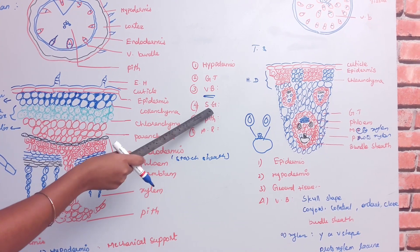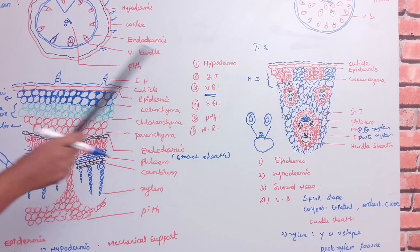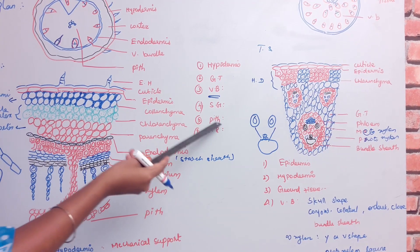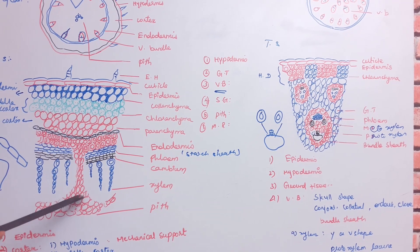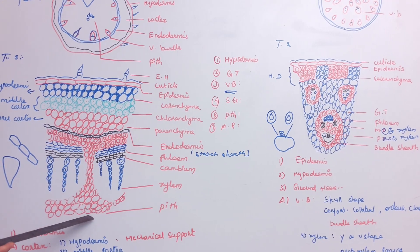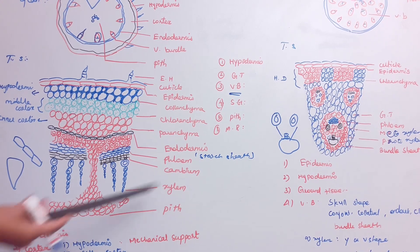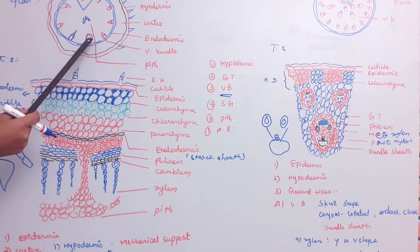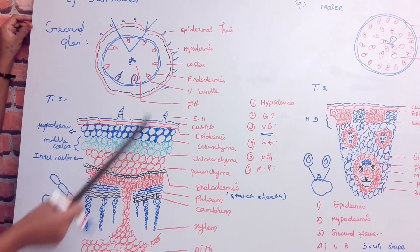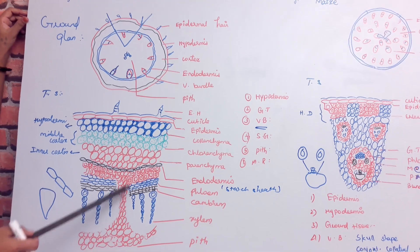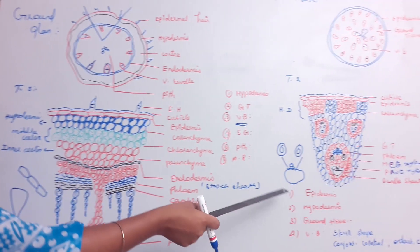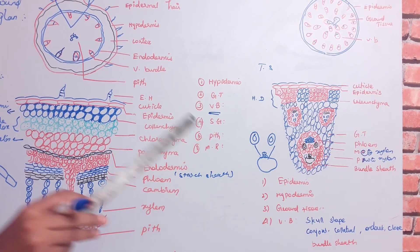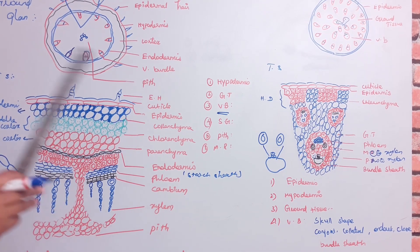Because the dicot vascular bundle is open, it can undergo secondary growth. In the monocot, secondary growth is absent. Regarding pith: in the dicot stem, the pith is well developed and present at the center. In the monocot stem, the pith is absent or not differentiated.